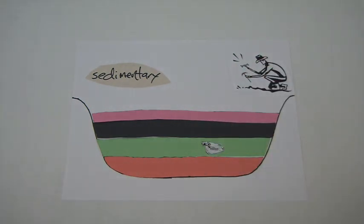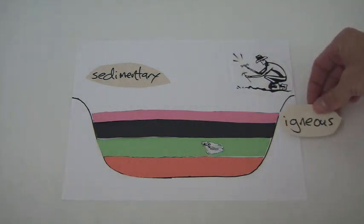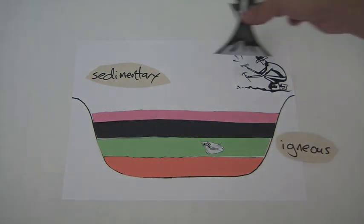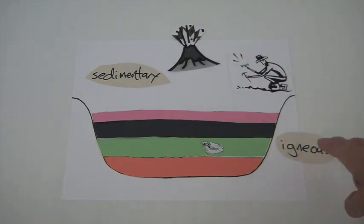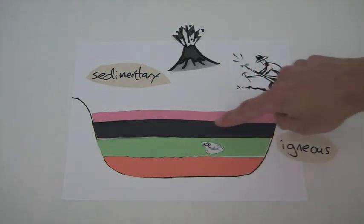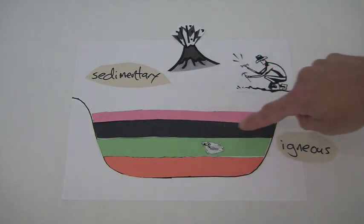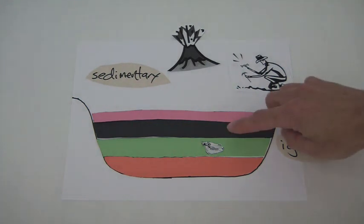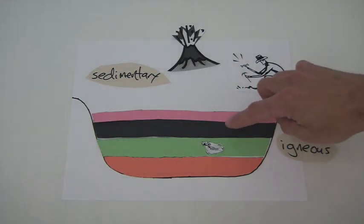Sedimentary rock layers don't give you an actual date, so what an archaeologist needs — what's preferable — is to find igneous rock layers. An igneous rock layer is a rock layer that has been formed from a volcano, formed from lava flows or the ash and pumice that spews out from a volcano. This one right here could be an igneous rock layer, and we have a way to absolutely date that rock layer — we can get the absolute age.